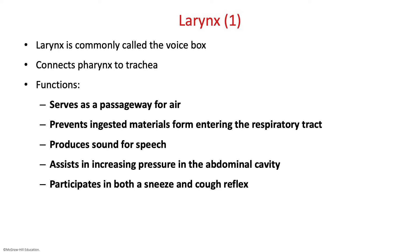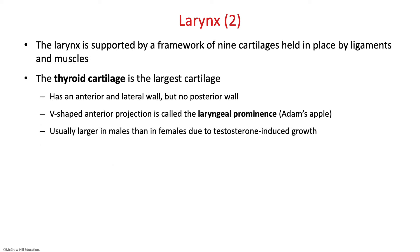The larynx connects your pharynx to your trachea. It serves as a passageway for air, prevents ingested material from entering your respiratory tract, produces sound, and assists in increasing pressure in your abdominal cavity for sneezing and coughing. It's supported by a framework of nine cartilages held in place by ligaments. The thyroid cartilage is the largest, and its V-shaped anterior projection is called the laryngeal prominence, or the Adam's apple. Testosterone causes males' Adam's apples to be more prominent.